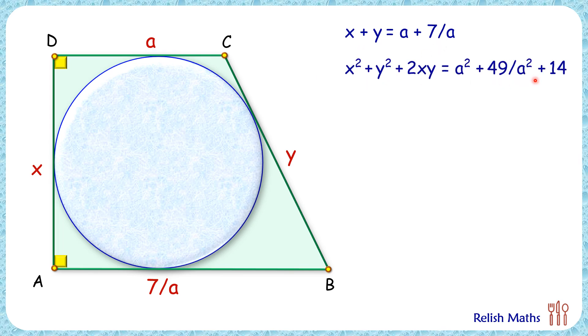Let's get the second equation. For that, from point C we will drop a perpendicular on AB. Now if we look at triangle CEB, here the length CE is x centimeters and the length EB is the full length AB minus AE, or 7/a minus a centimeters. Applying Pythagorean theorem, we'll get x² plus (7/a - a)² equals y².